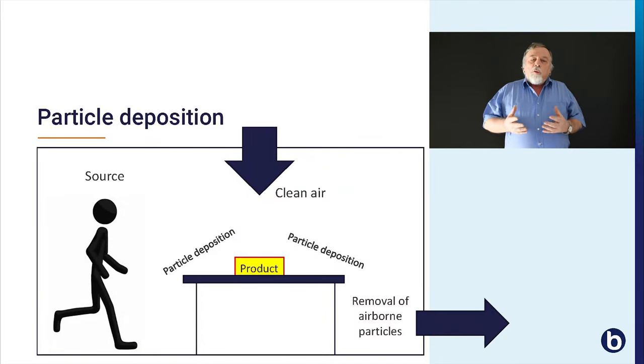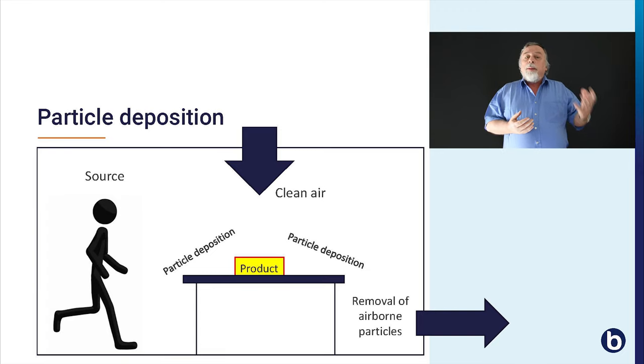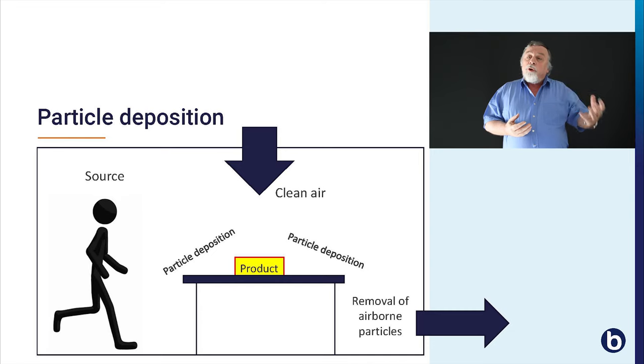Here you see a diagram with a product on a table and a person. In a clean room, people are the major source of contamination — a person sheds skin particles and microorganisms. The air around this person is mixed with clean filtered air so that the resulting concentration of particles in the air reduces. The airflow removes all airborne particles out of the clean room, but large particles that cannot stay in this air flow will deposit on all surfaces.